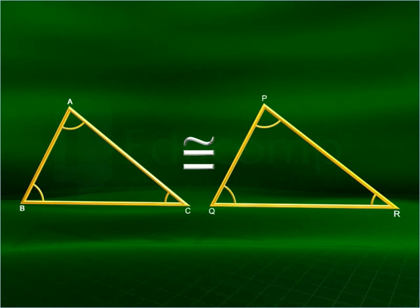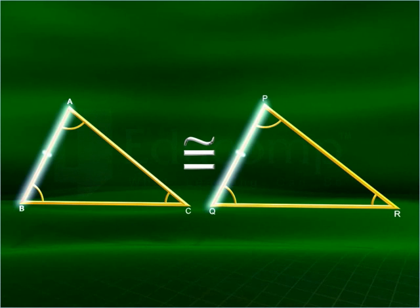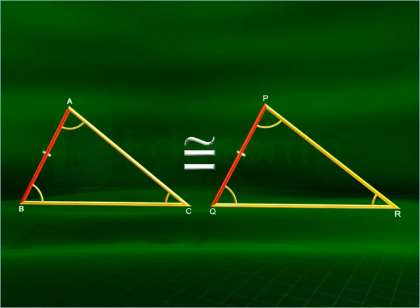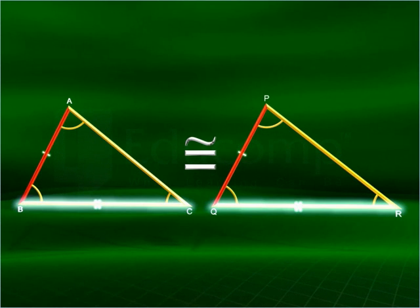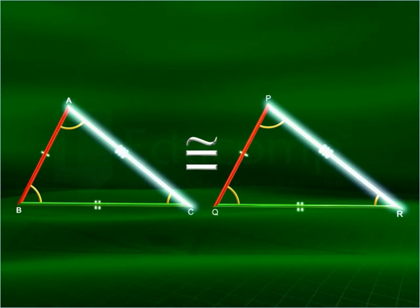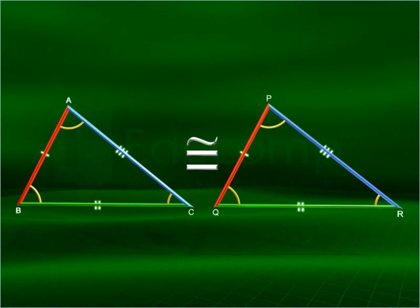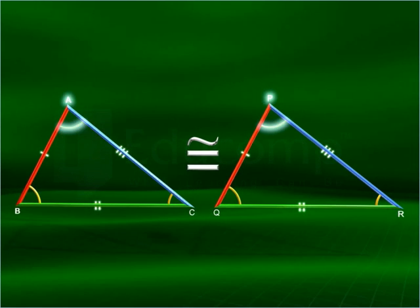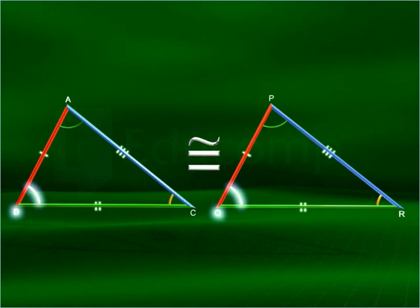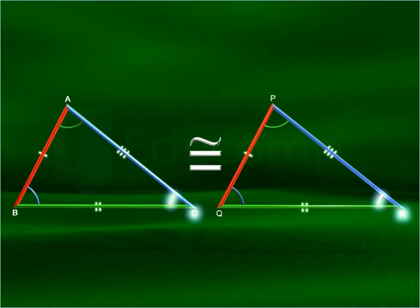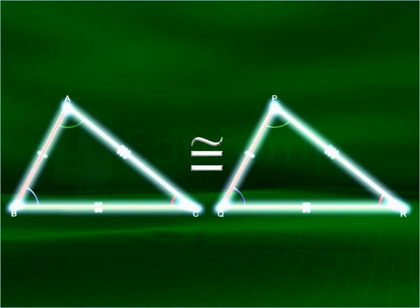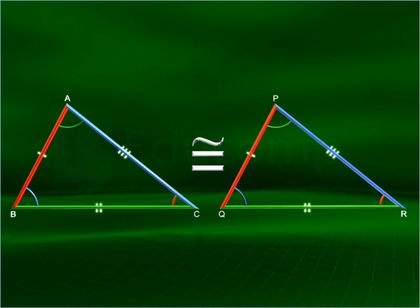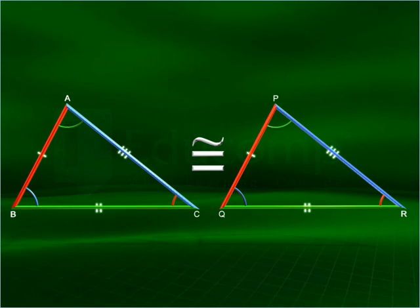Side AB corresponds to PQ, BC corresponds to QR, and AC corresponds to PR. Similarly, angle A corresponds to angle P, angle B corresponds to angle Q, and angle C corresponds to angle R. In other words, the corresponding line segments are equal in length, and the corresponding angles have equal measure.